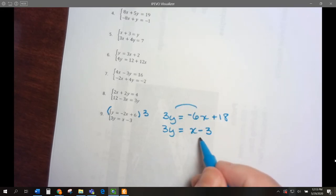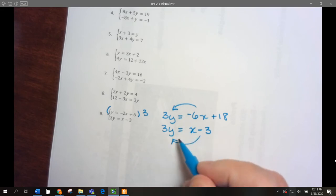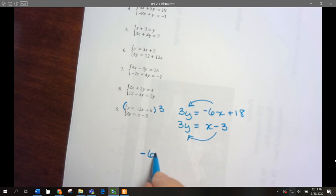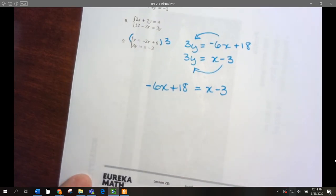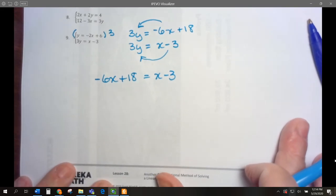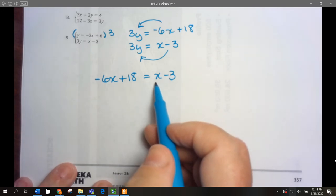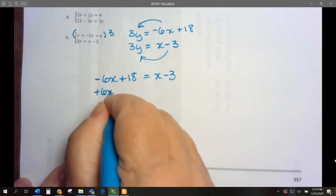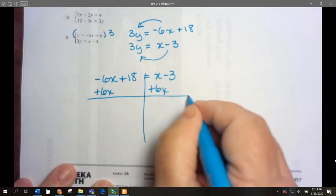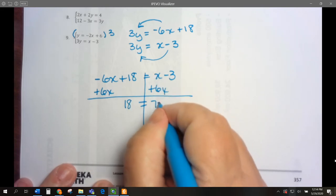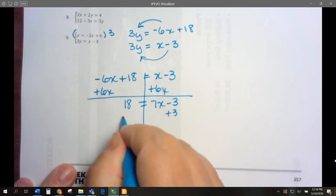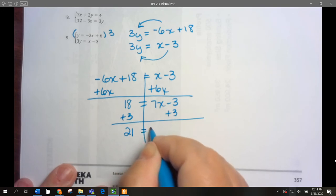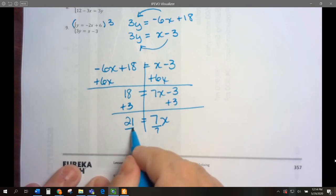If this equals 3y and this equals 3y, they have to equal each other. So I have negative 6x plus 18 equals x minus 3. We now have an equation with variables on both sides. We get rid of the variable that has the smallest coefficient. Negative 6 or positive 1? Negative 6. So we add 6x to both sides. We get 18 equals 7x minus 3. Add 3 to both sides, divide by 7, and x is 3.